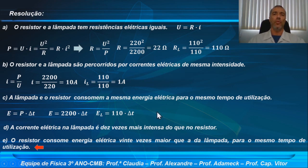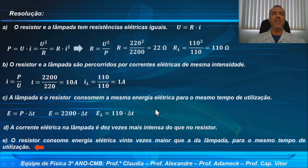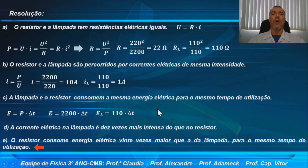Eu sugiro que você refaça essas duas questões novamente, sem visualizar a solução previamente. Se restar dúvida, volte e veja como foi resolvida a questão. Enfatizo que você deve ler os capítulos referentes à corrente elétrica, potência da corrente elétrica, energia, e também o capítulo de resistência elétrica e resistores, lei de Ohm, incluindo a segunda lei de Ohm, em que a resistência depende do comprimento do condutor dividido pela área da seção transversal vezes a resistividade. Sempre faça essa leitura dos capítulos para se preparar bem para a prova de recuperação.